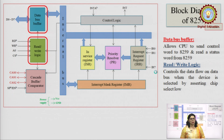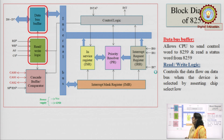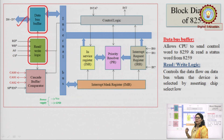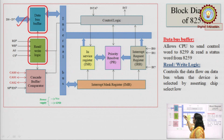The data bus buffer is used to read any control word from the processor or to read the status of any interrupt. Moreover, any communication we do with the processor — whether regarding control words or status words — is always done through the internal bus of the microprocessor via the data bus buffer.